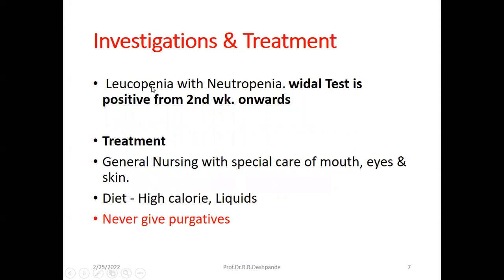Investigations: leukopenia — a reduced white blood cell count. On hemogram, you will find the total leukocyte count reduced. Normal WBC count is 4,000 to 11,000 per cubic mm, but in typhoid it may be around 4,000 or even 3,500 per cubic mm. There is also neutropenia — neutrophils are reduced from the normal 75% down to around 60–65%. Although it is an infection, there is still leukopenia and neutropenia. Most importantly, do not forget the Widal test — it is always asked in MCQs. The Widal test is positive from the second week onward.